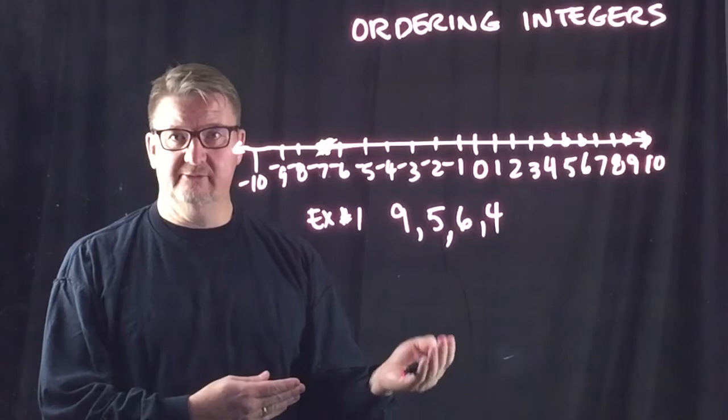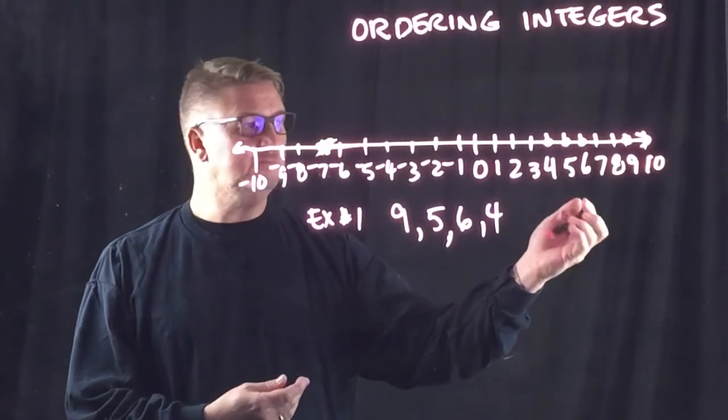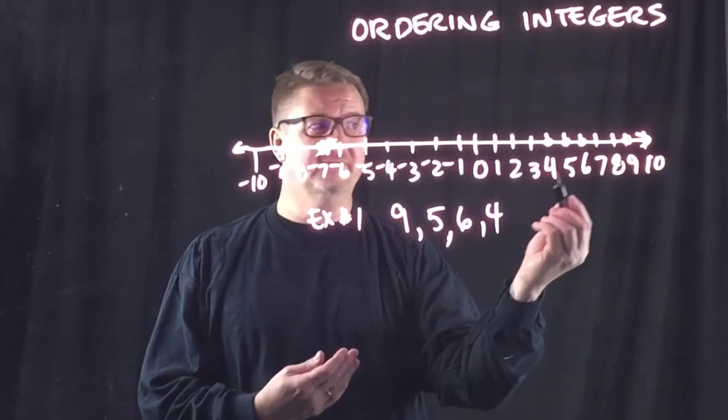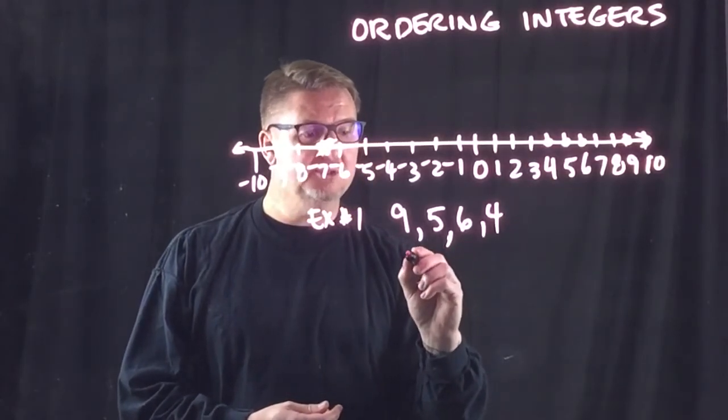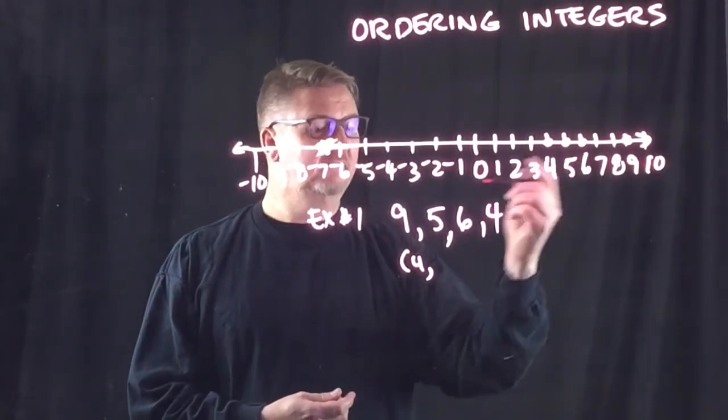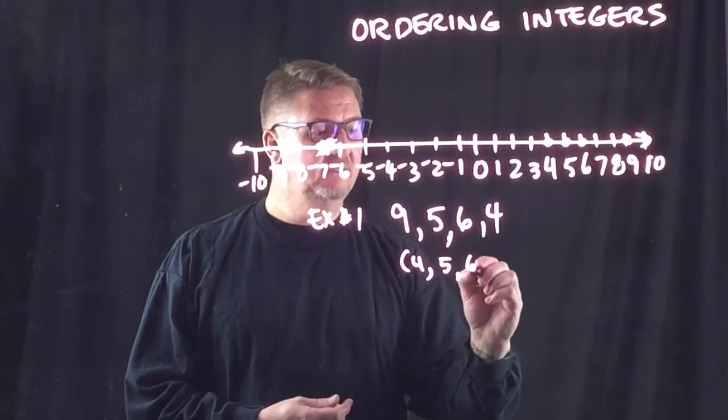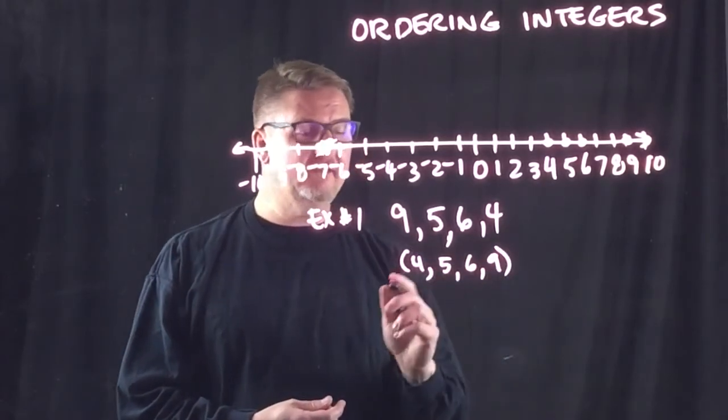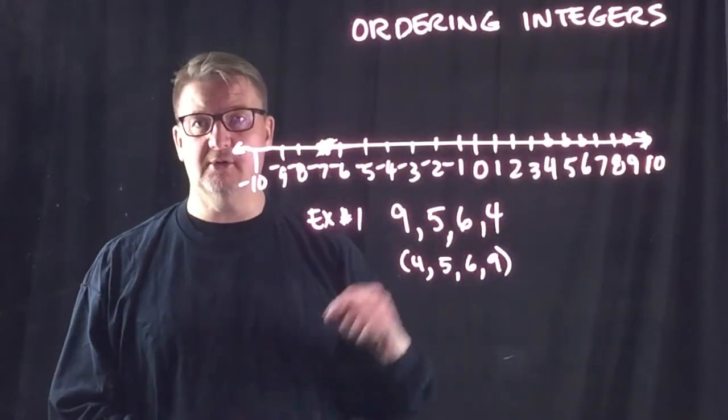So, if I'm going to order these from least to greatest, I'm just going to read them from left to right. 4 is my smallest number. Next is 5. Then I have 6. And then I have 9. So, those are my numbers in order from least to greatest.